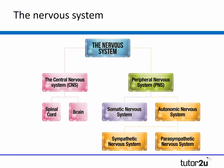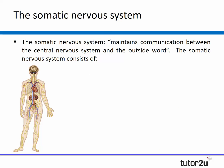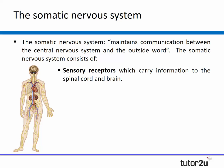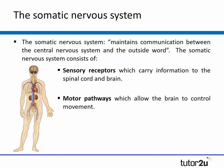Now let's look at the peripheral nervous system. Its job as a whole is to relay messages from the central nervous system to the rest of the body. It has two main components: the somatic nervous system and the autonomic nervous system. The somatic nervous system maintains communication between the central nervous system and the outside world. It is made up of sensory receptors that carry information to the spinal cord and the brain, and motor pathways that allow the brain to control our movement, enabling us to respond to the environment.